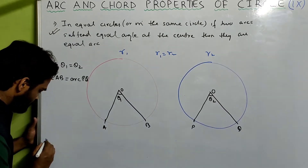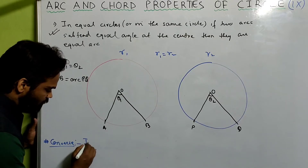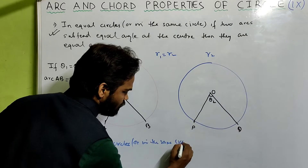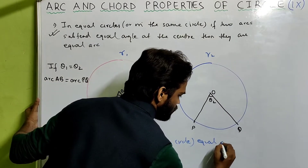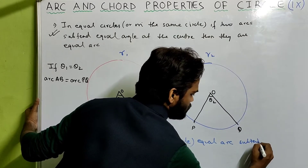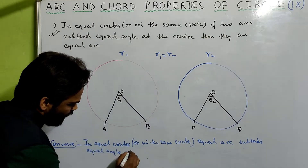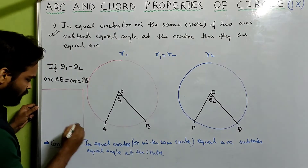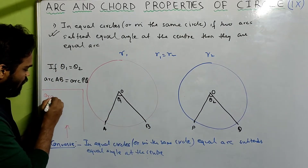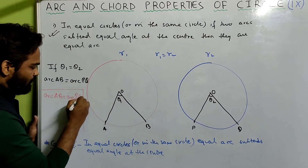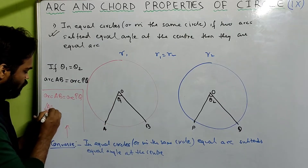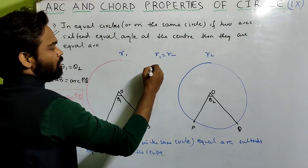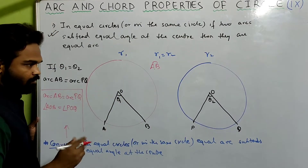The converse of this: in equal circles or in the same circle, equal arcs subtend equal angles at the center. The converse means if the length of the arc is the same — if arc AB equals arc PQ — then the angle subtended by those two arcs of the same length will be equal. Remember, arc AB can also be written with the arc notation.